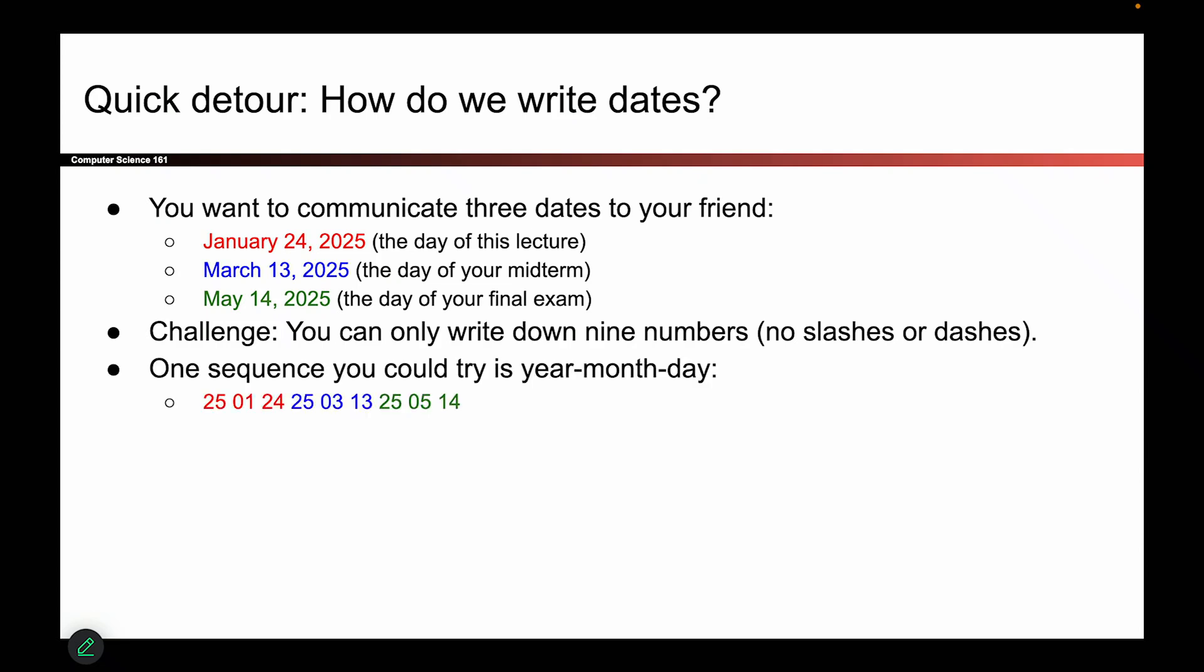So one possibility is I could write the year first, and then the month, and then the day. So I could write 25, 01, 24. That represents today's date of January 24, 2025. And then I do the same thing for the second date and the third date. But that's not the only way I could have done it. So maybe you prefer if I write day, month, year instead. So now I'm writing the 24 first, that's the day, and then the 01, that's the month, and then the 25, that's the year.